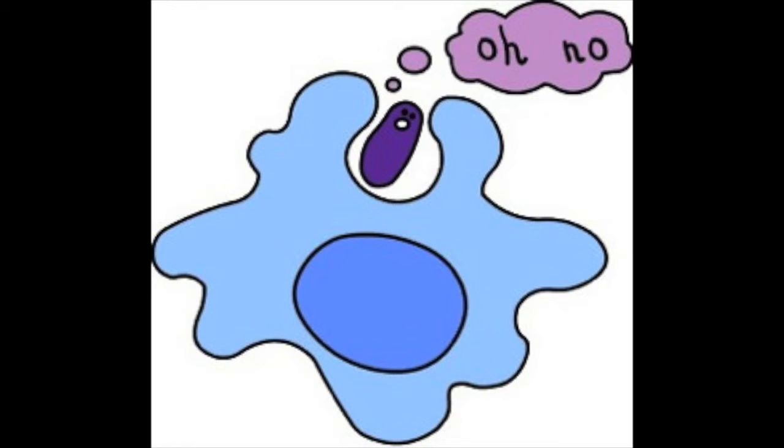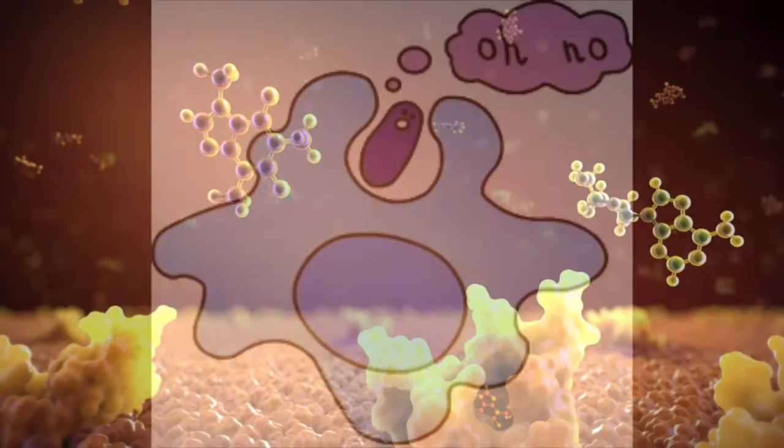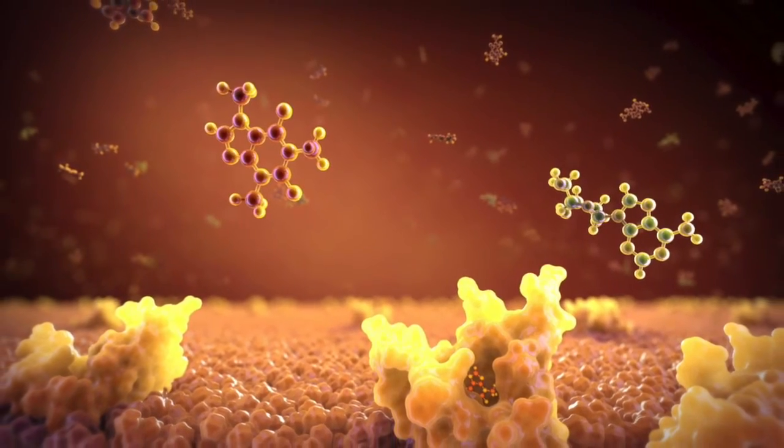TLRs not only signal phagocytosis, but also activate a signal cascade of cytokines, which are chemical molecules that tell the rest of the body there is an infection present.